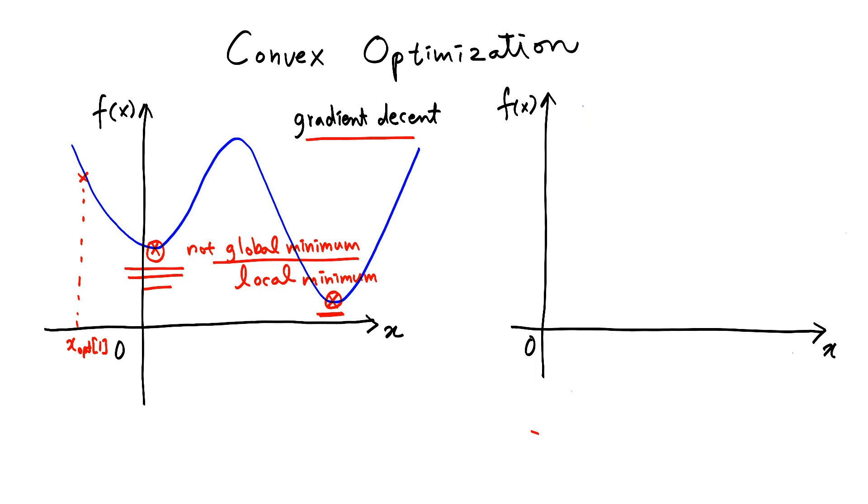But if our function is a convex function, this is an example of a convex function. When we say convex, we see convexity everywhere.